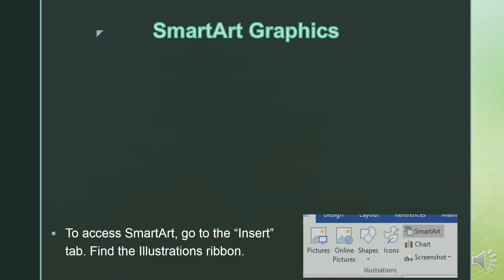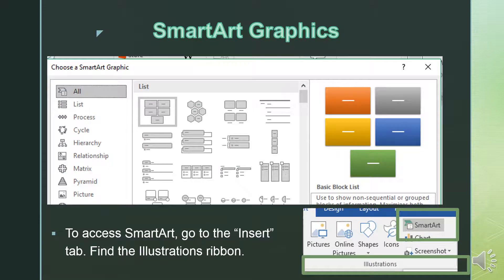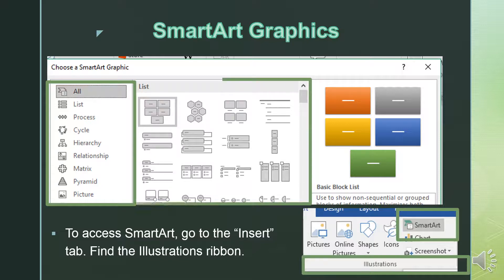To access SmartArt, go to the Insert tab and find the Illustration Ribbon. You will see a listing of all the different types of SmartArt. You will select the one that you want to use, such as process, and then you will have different types of options for the SmartArt of your choosing.